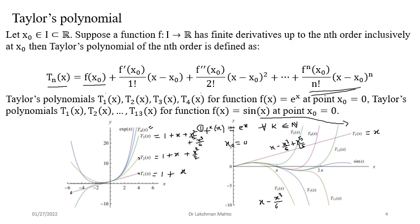If you zoom out, the approximation is valid in a very small neighborhood of zero — approximation is very fine near zero. But if you go further away, there is deviation. The linear T₁ is very far from the actual sine function (which is oscillatory). If x is far from the origin, T₁ is far from sin(x). But in a very small neighborhood of zero, x ≈ sin(x), and T₃ is also close to sin(x). This is the idea: visualize the various Taylor polynomials of a given function.